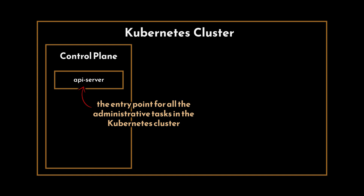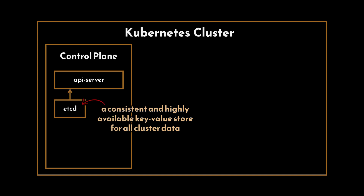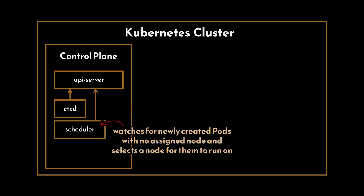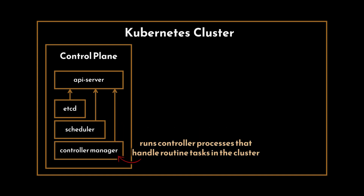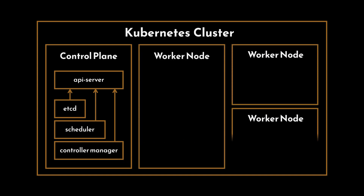The master includes four main key components. The API server: this is the entry point for all administrative tasks in the Kubernetes cluster — it exposes the Kubernetes API, processes REST operations, validates and executes them. The etcd: a consistent and highly available key-value store used as Kubernetes's backing store for all cluster data, storing configuration data accessible by each node. The scheduler: watches for newly created pods with no assigned node and selects a node for them to run on based on resource availability and other constraints. The controller manager: runs controller processes that handle routine tasks such as managing applications, ensuring the correct number of pods are running, and handling node operations.